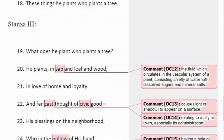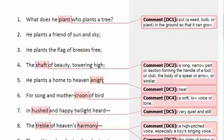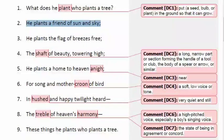Let's get started with stanza number one. What does he plant who plants a tree? The poem starts with a question. If there's a person who plants a tree, is he just planting a structure with branches, stems, leaves, flowers, and fruits, or what does a person really bring in when planting a tree?